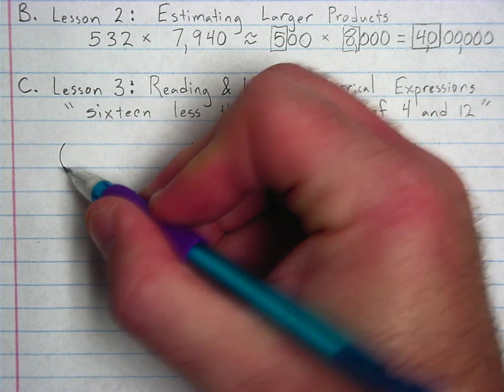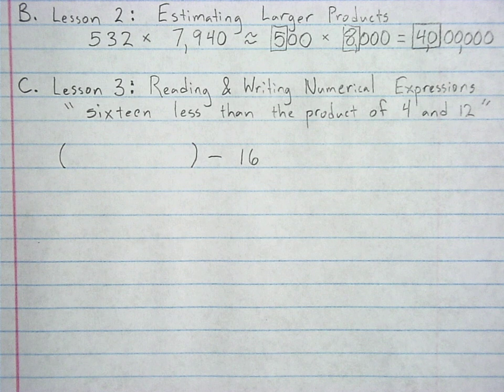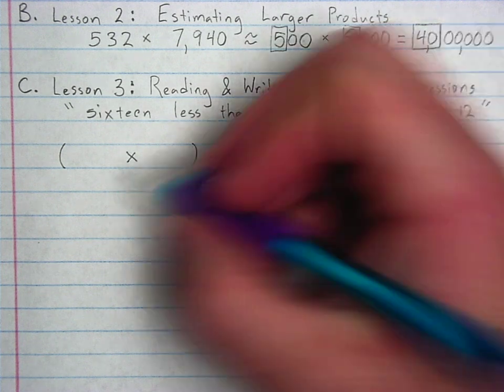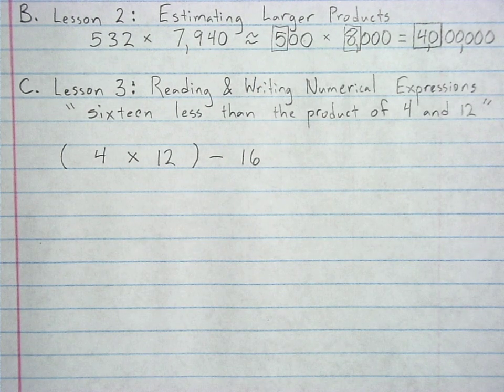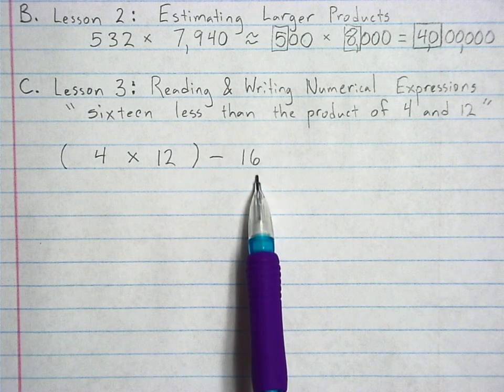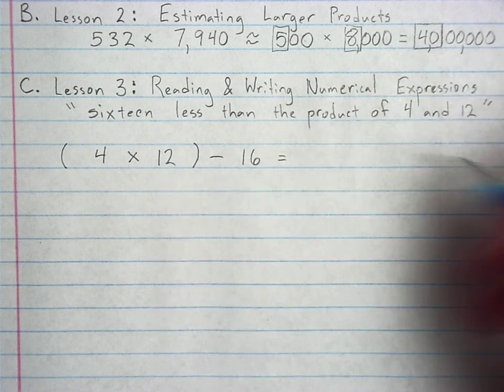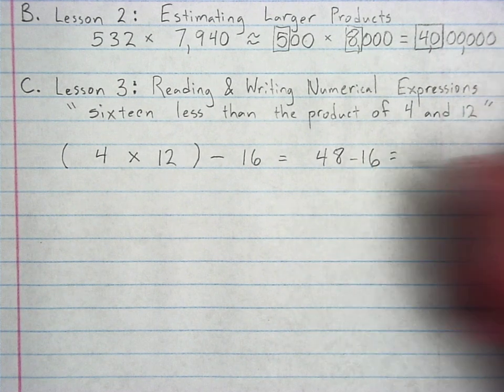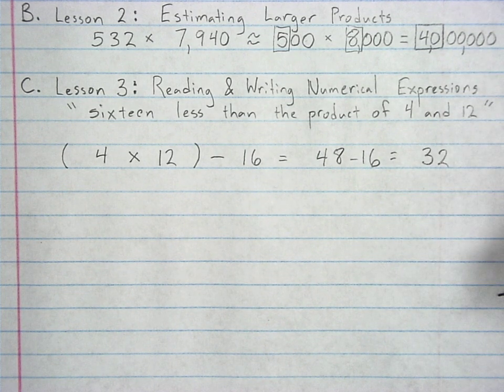The product of. When you see the product of, the sum of, the quotient of, the difference between, think about those parentheses that I love so much. I mean, they're not arrows or anything like that, but I do enjoy them. The product. That's multiplication. The product of 4 and 12. Okay. 16 less than, so 16 taken away from, the product, multiplication, of 4 and 12. If I solve what's in the parentheses, I would get 48. Subtract 16 from that. The answer to this equation, to this numerical expression, would be 32.